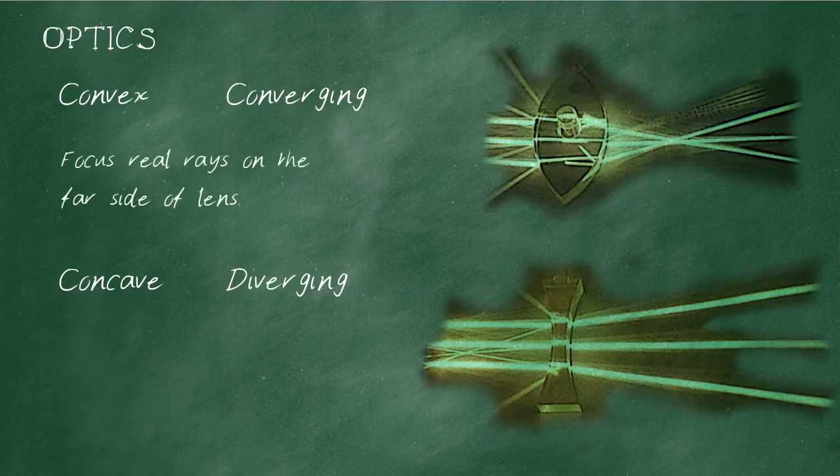Converging lenses focus what we call real rays on the far side of the lens. This point is called the focus, and it's where the rays converge.